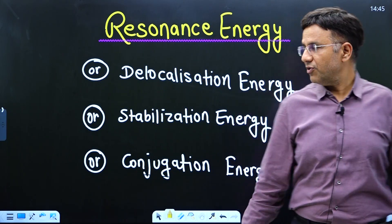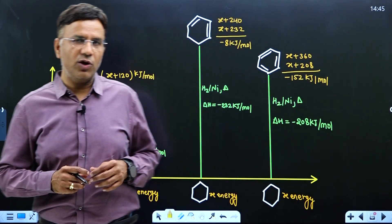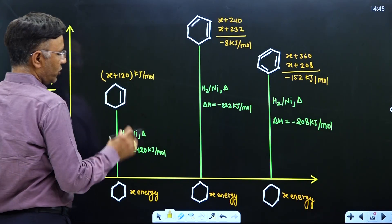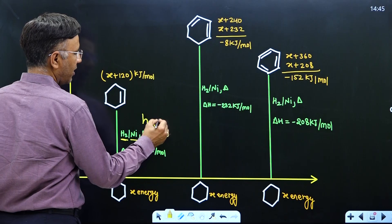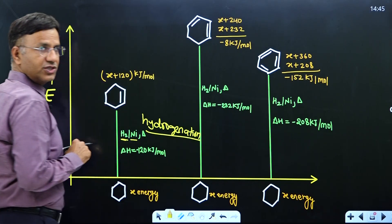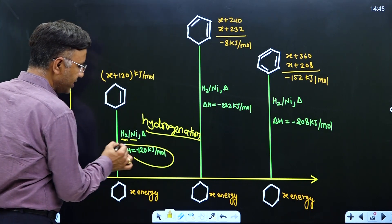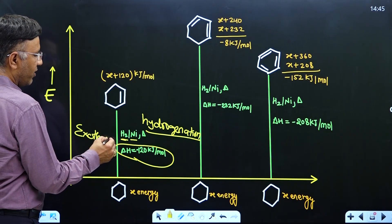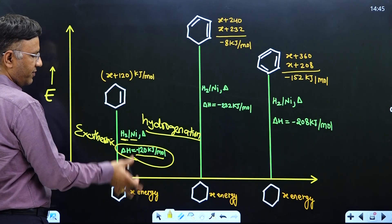Let us consider the most important and beautiful example of benzene. First, consider cyclohexene undergoing hydrogenation in the presence of H2 and nickel. Hydrogenation means addition of H2 — cyclohexene converts into cyclohexane. This is an exothermic process: a pi bond breaks and a sigma bond forms, releasing minus 120 kilojoule of heat.